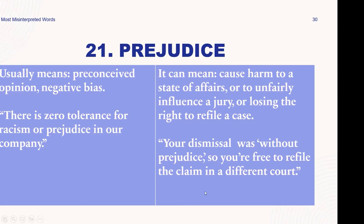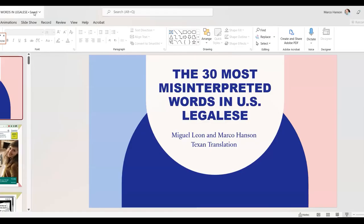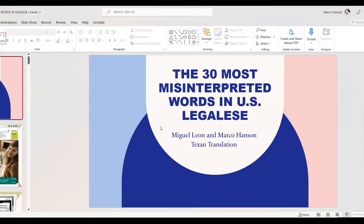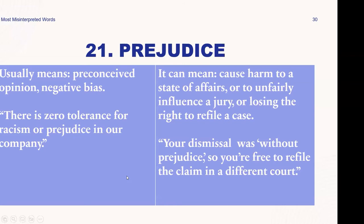In the movie 'Double Jeopardy,' a woman was found guilty of murdering her husband, and several years later they make a big point of the fact that she could actually kill him and the law could not do anything to her because she had already been convicted for killing him — even though he wasn't dead at all. That's a dramatic illustration of the 'with prejudice' concept in action.